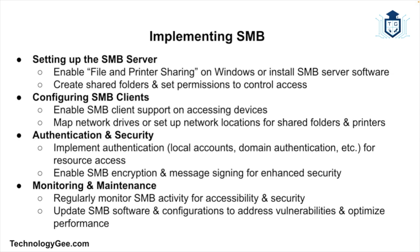Next, set up authentication and security by implementing authentication mechanisms to control access to shared resources, which can include local accounts, domain authentication, or other methods, and enable SMB encryption and message signing to enhance security. Finally, for monitoring and maintenance, regularly monitor SMB activity to ensure shared resources are accessible and secure, and update SMB configurations and software to address vulnerabilities and improve performance.